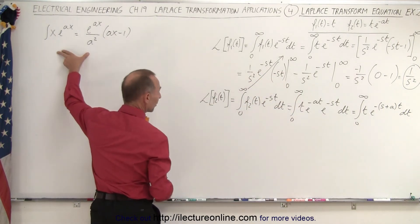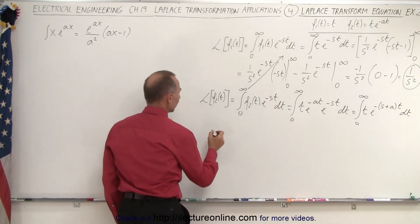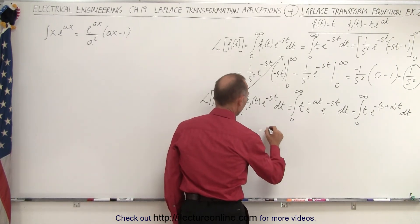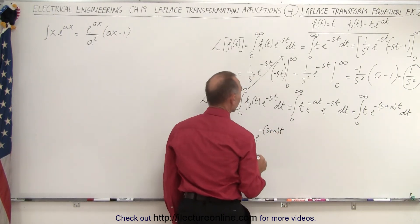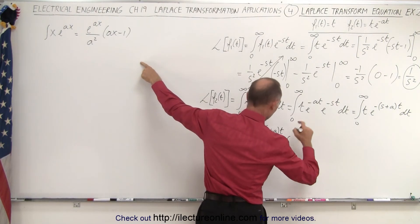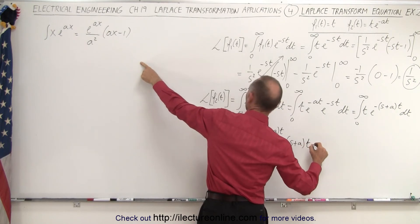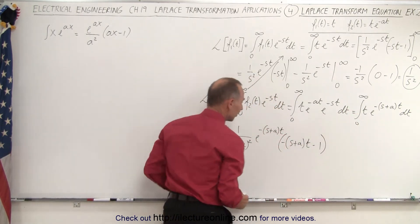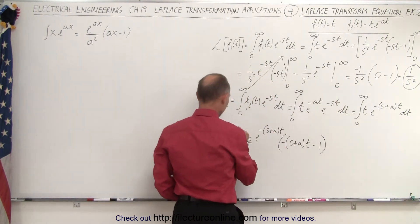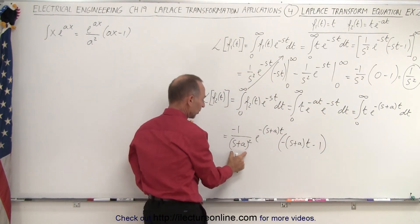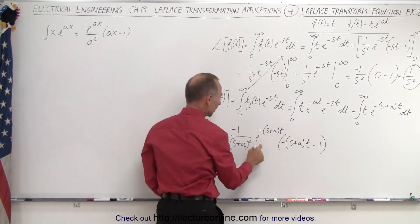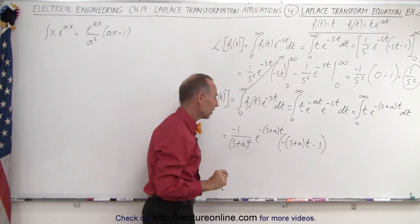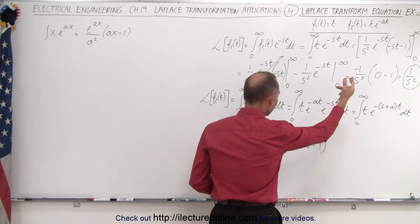The whole thing will be the same — we use the same principle, but replace s with s plus a. This becomes one over the quantity s plus a squared, times e to the minus s plus a times t, times the quantity negative s plus a times t minus one. So minus one over s squared becomes minus one over s plus a squared, and e to the minus st becomes e to the minus s plus a times t.